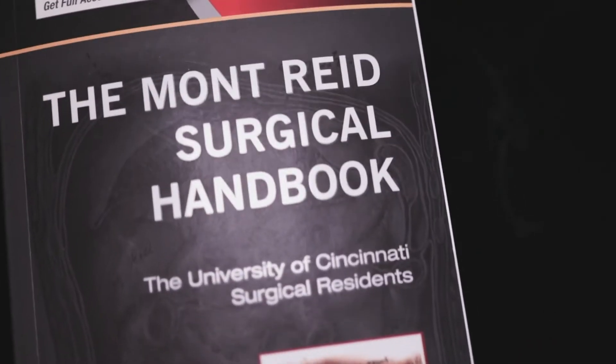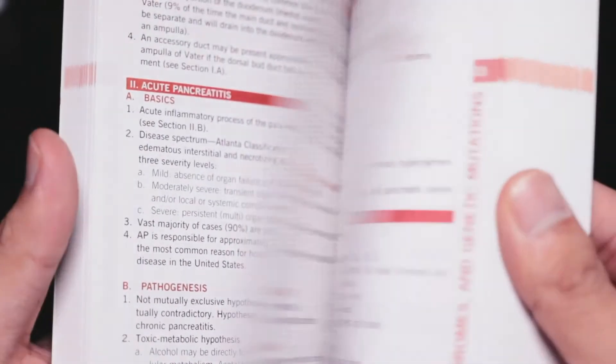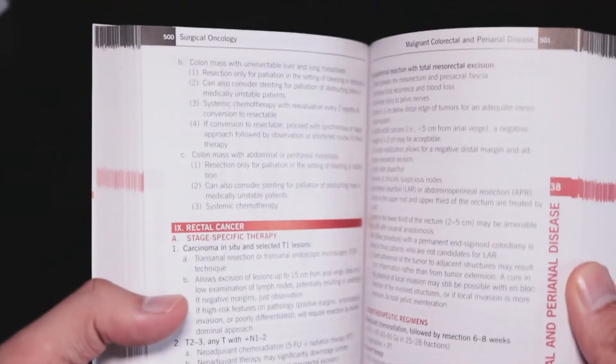The next book I would recommend to a student on surgery is the Montreide Surgical Handbook by the University of Cincinnati Surgical Residence. They just came out with a new edition and it's a very pretty book. My favorite thing about this book is the way the information is organized in bullet points throughout the book. Any information is very easy to find.